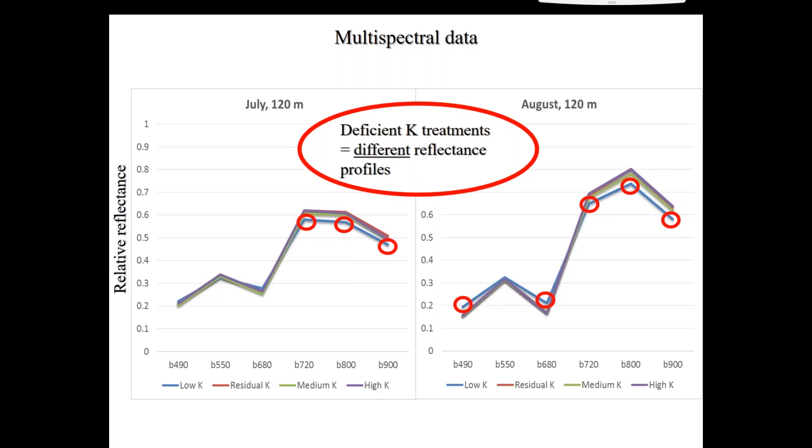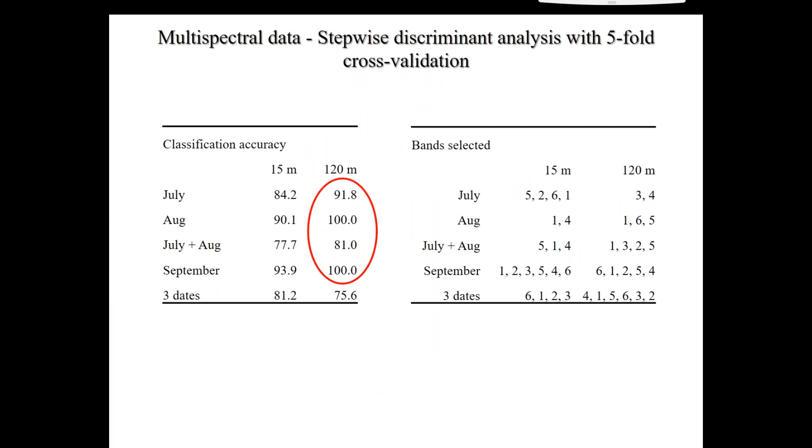And the deficient potassium treatments, especially in August, showed that separation. So that gave me a bit of confidence that we more than likely are going to be able to differentiate this, differentiate potassium-deficient canola areas from sufficient.